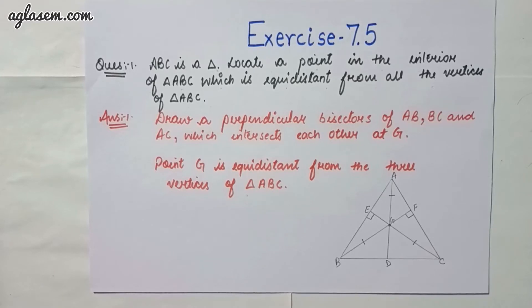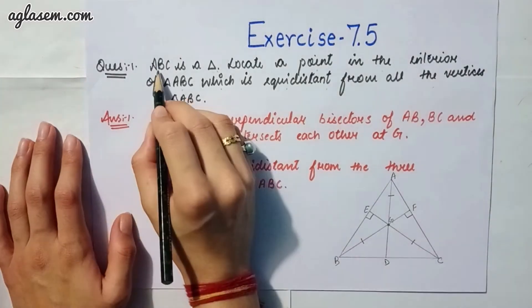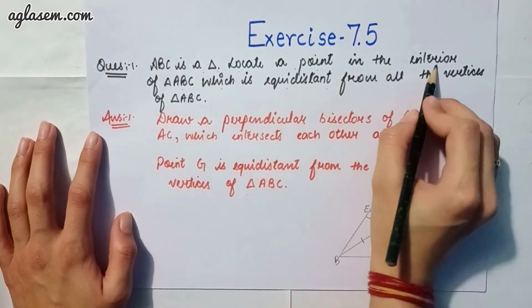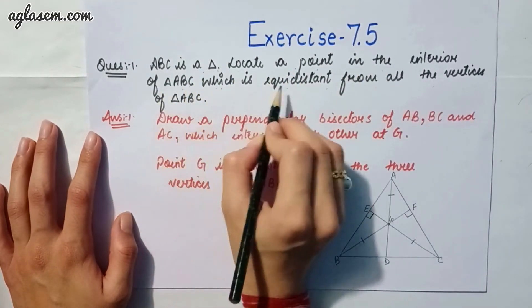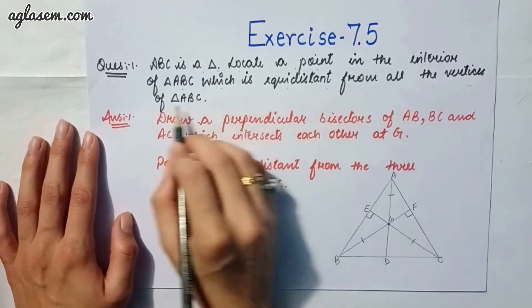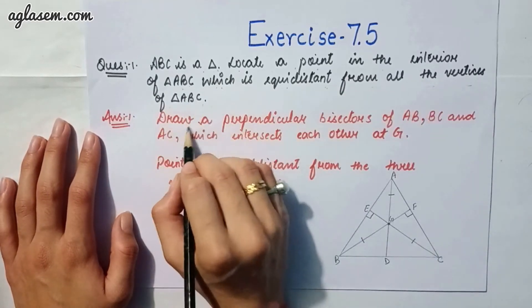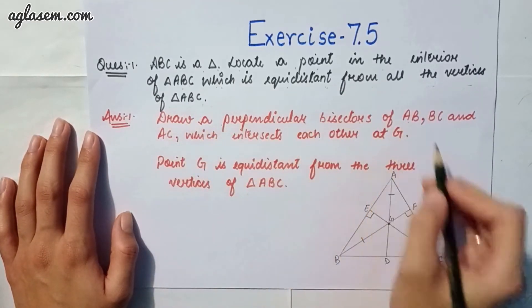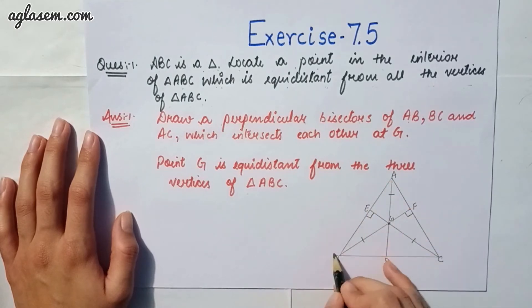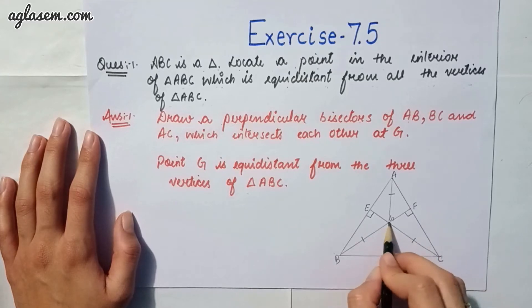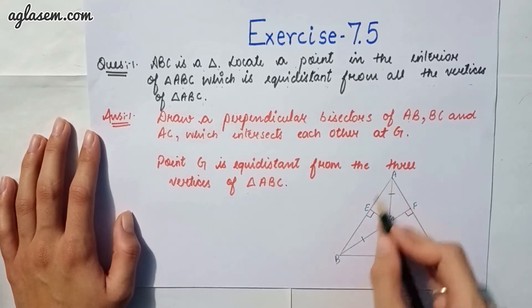Our first question says: ABC is a triangle, locate a point in the interior of triangle ABC which is equidistant from all the vertices of triangle ABC. So we have to draw a perpendicular bisector of AB, BC and AC which intersects each other at point G. So point G is equidistant from the three vertices of triangle ABC.